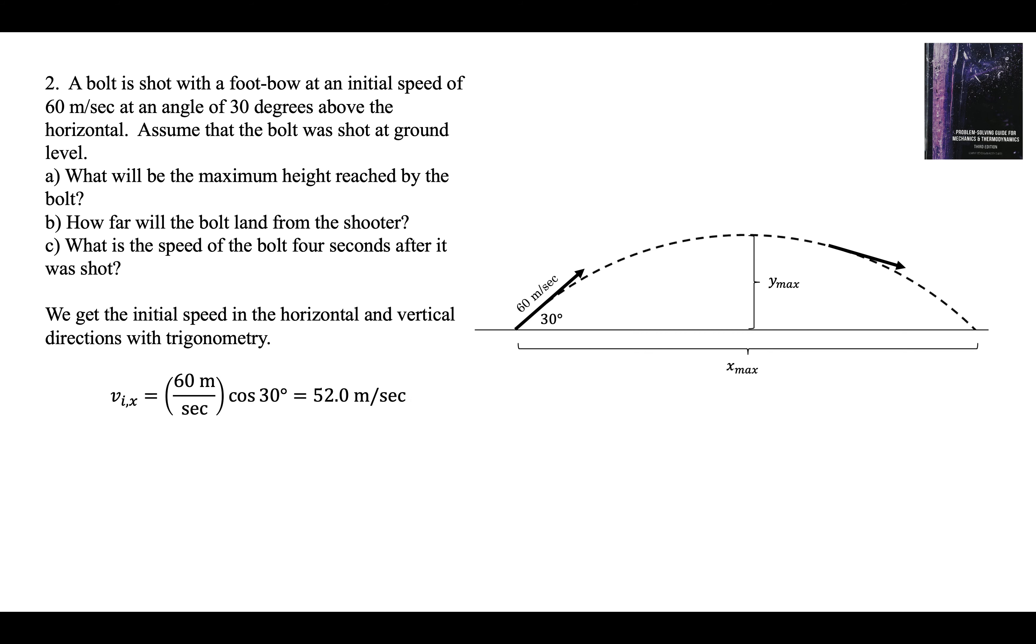We'll use trigonometry. The initial in the x direction is 52 meters per second. The initial in the y direction is 30 meters per second. So now we can start doing the physics because we know what happens to those two speed components. The y changes by 10 meters per second each second in the downward direction. The x does not change.